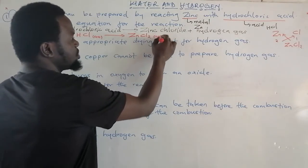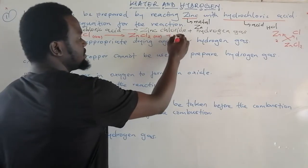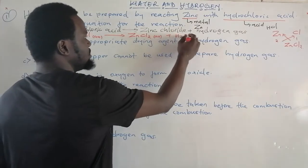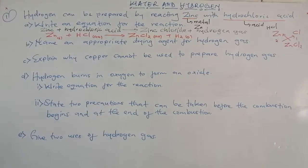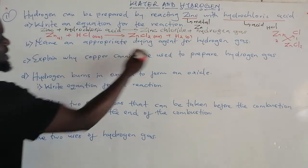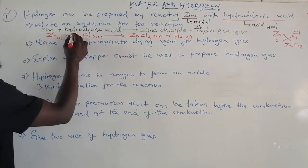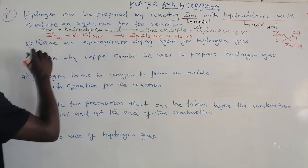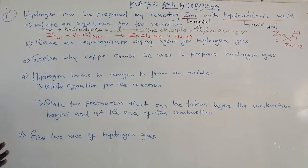Zinc chloride is a soluble salt, plus hydrogen gas. Now I can balance the equation. How many hydrogen do I have? Two. And chloride? Two. So when I put a coefficient of two for HCl, it will be completely balanced.